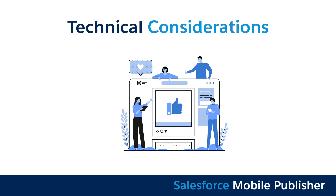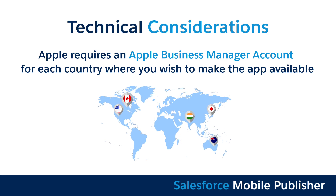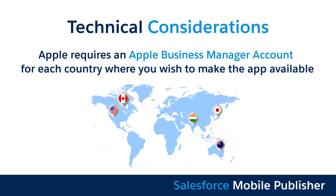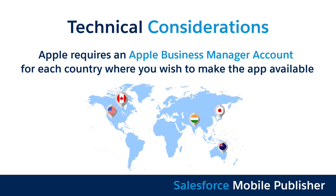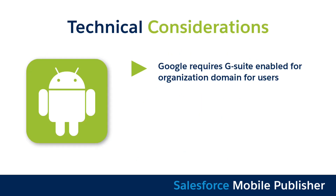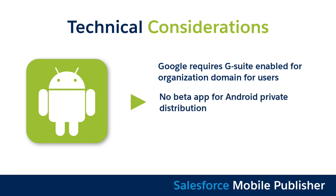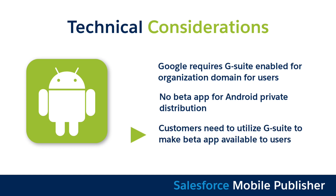If you're thinking about private distribution, keep these technical aspects in mind. Apple requires an Apple Business Manager account for each country where you wish to make the app available. For Android apps, Google requires that you have G Suite enabled for their organization domain, and that the app is only available to users who are part of that same G Suite organization. There is no beta app provided with Android private distribution, and customers will need to utilize G Suite and Google for work in order to make the beta and final app version available to end users.